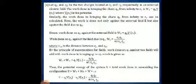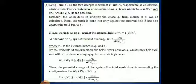Let q1 and q2 be the 2 charges located at distances r1 and r2 respectively in an external electric field. Here, we are bringing the charges q1 and q2 to a region where already an electric field is present. The work done in bringing the charge q1 from infinity to the point r1 is W1, which is equivalent to q1 into V of r1, where V of r1 is the potential already present in that region due to the electric field.